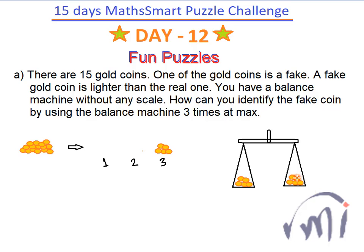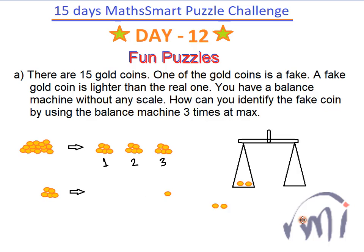Take the lightest heap and divide it into three groups: two groups of two coins each, and one group of just one coin. Now compare the weights of the two groups of two coins on the balance. There are only two possibilities: either one group is lighter, or both groups have equal weight. If both groups weigh the same, then the single leftover coin is the lightest — it is the fake coin.